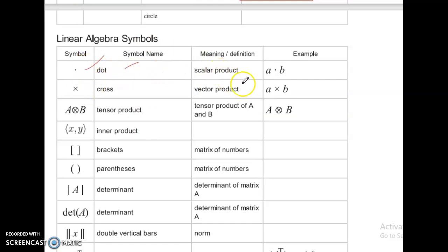Dot. Symbol name dot. Meaning definition, scalar product a dot b. Cross, vector product. This one is correct to be remembered. Dot product, scalar product. Cross product, vector product, a cross b. This is a dot b.